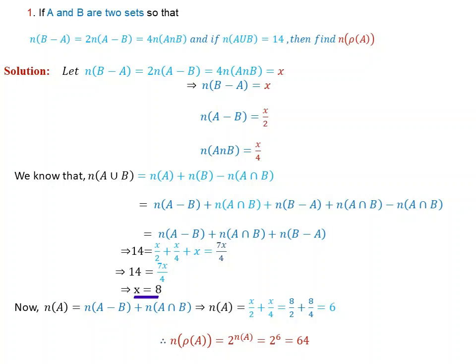Now that X equals 8, we find number of A. We know number of A equals number of A without B plus number of A intersection B, which is X over 2 plus X over 4. Substituting X equals 8: 8 over 2 is 4, and 8 over 4 is 2, so number of A equals 6. Since number of power set of A equals 2 to the power of number of A, we get 2 to the power of 6, which is 64.